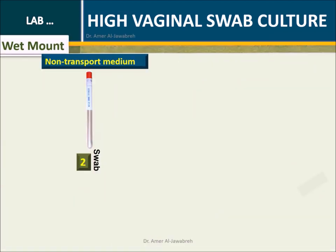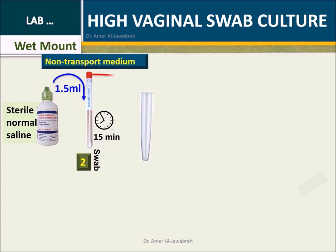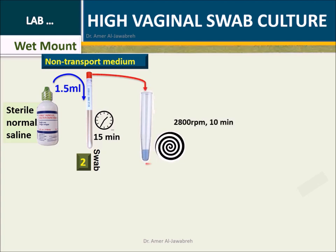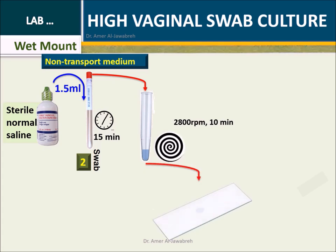Wet mount (non-transport medium): Add 1.5 ml of sterile normal saline to the non-transport medium. Incubate for 15 minutes. Centrifuge at 2800 RPM for 10 minutes. Examine the sediment for Trichomonas and yeast.